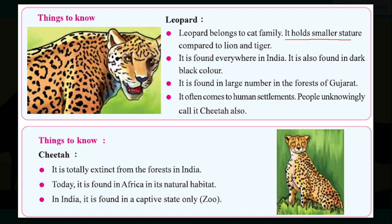The cheetah is a different species — it has black round spots, is a bit smaller, but is faster in running. It is now extinct from the forests of India. Our Prime Minister Modi brought five to seven cheetahs from Africa, but right now they are not thriving because they are not adapted to the habitations of India, and they are about to die.